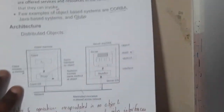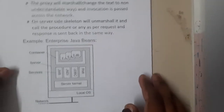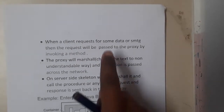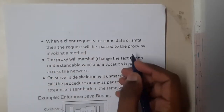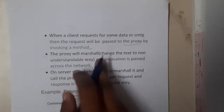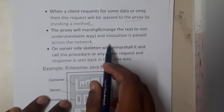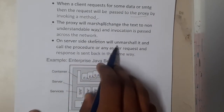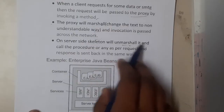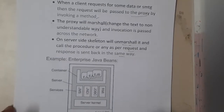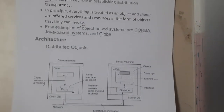The server skeleton handles unmarshalling and object invocation. To summarize the flow: when a client requests data, the request passes through the proxy, which marshals the message into an unreadable format and passes it through the network. On the server side, the skeleton unmarshals the message and calls the procedure as per the request. I hope everyone got a basic idea about this distributed object architecture.